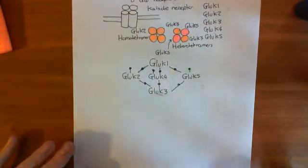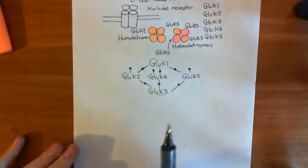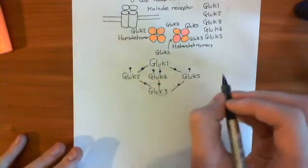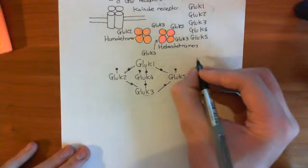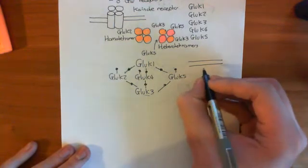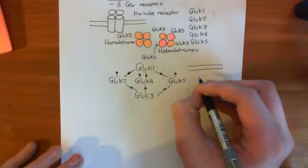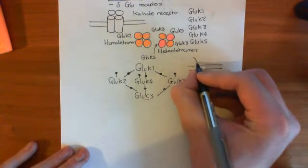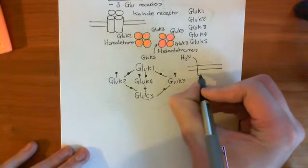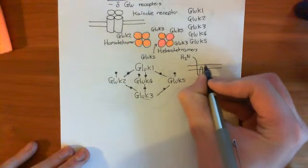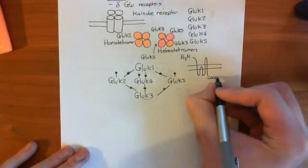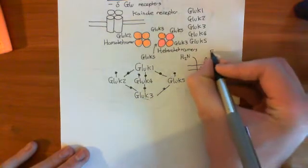Now we've looked at how you assemble tetramers of kainate receptors. Let's look at the membrane-spanning topology of a single subunit — say GluK1. It has a very similar, almost identical, membrane-spanning topology to AMPA. The amino terminus is extracellular; it then spans the membrane once, has a loop which tries to span the membrane but doesn't succeed, then another transmembrane domain, and finally a fourth membrane-spanning domain. The carboxyl terminus stays in the cytosol.